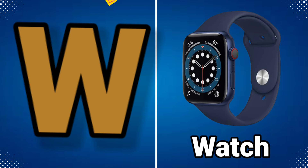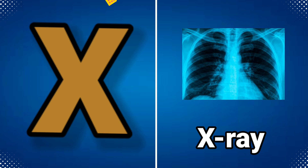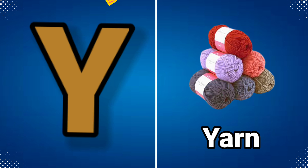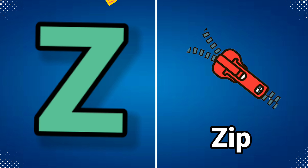W for watch, X for x-ray, Y for yarn, Z for jeep.